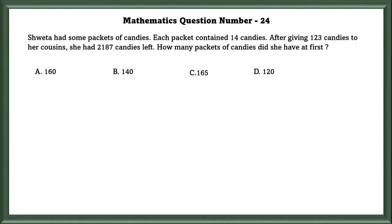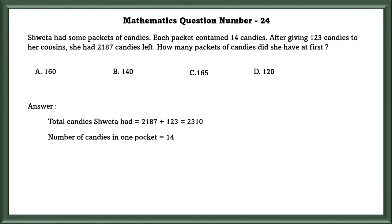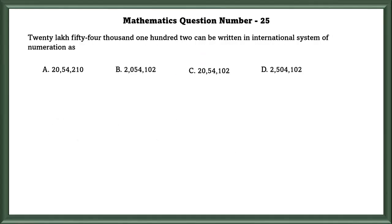Mathematics question number 24: Shweta has some packets of candy, each containing 14 candies. After giving 123 candies to her cousins, she had 2,187 candies left. Total candies she had equals 2187 plus 123, which is 2,310. Dividing by 14 candies per packet gives 165 packets.